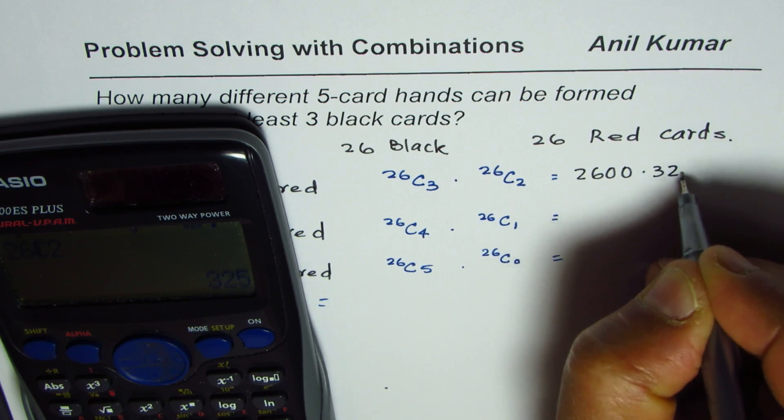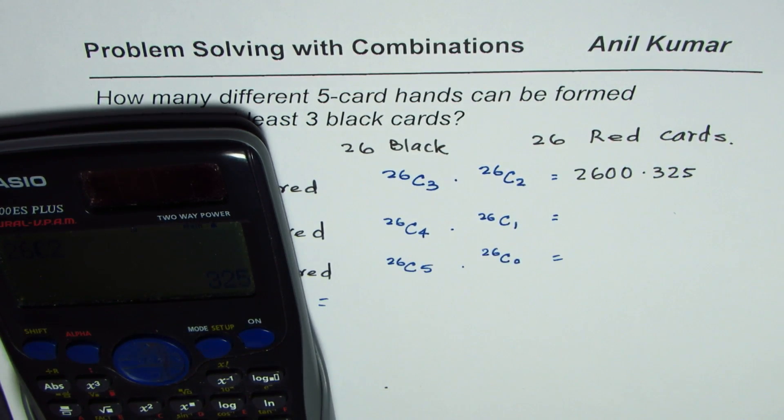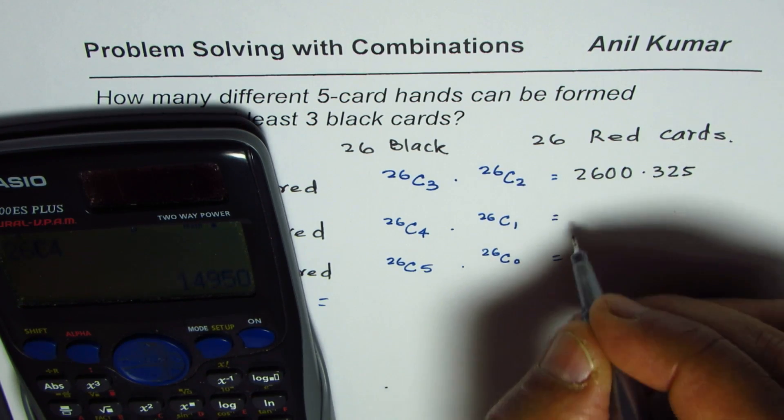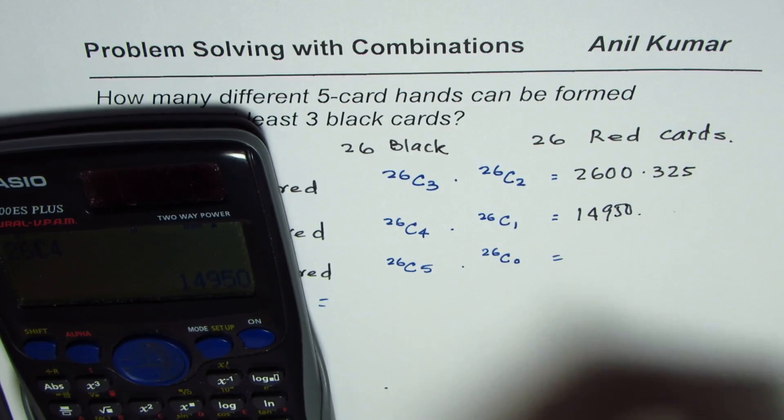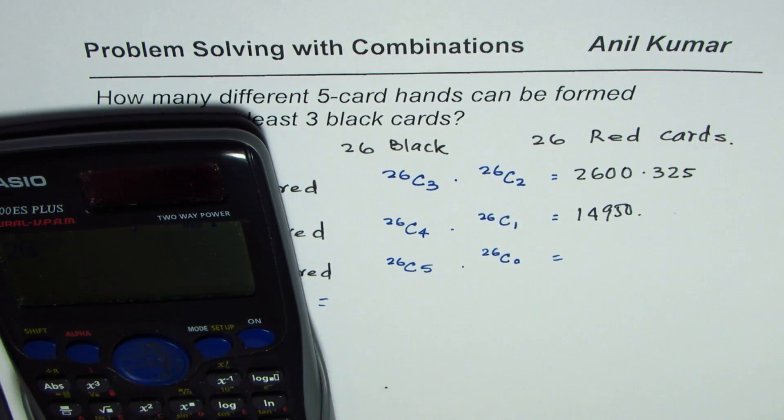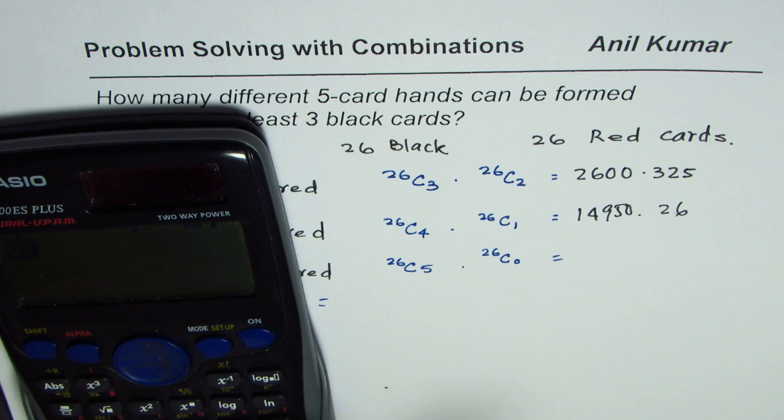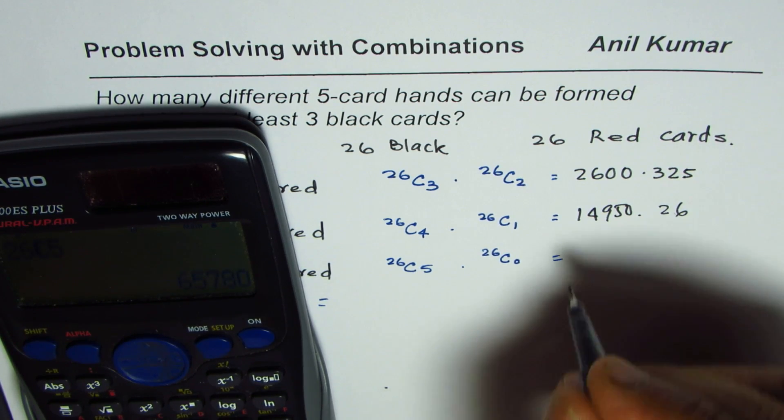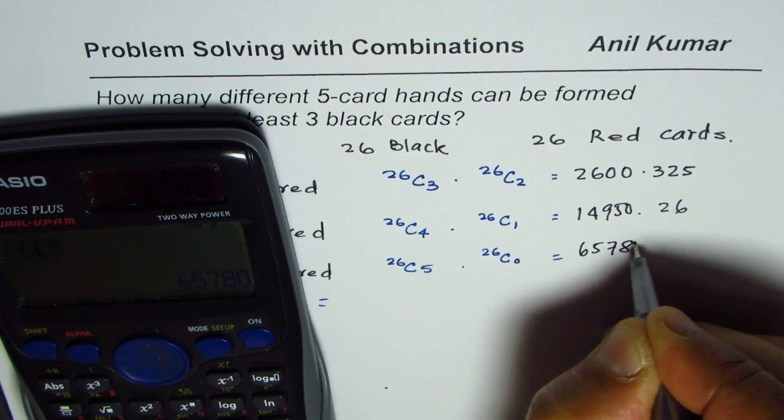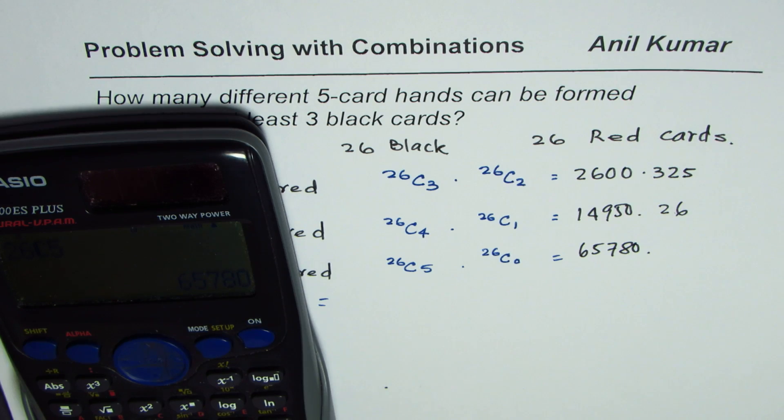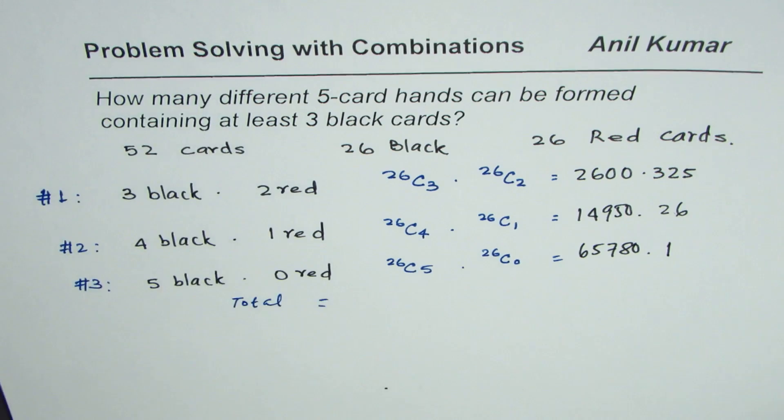And then we have 26C4, so 26C4, which is 14,950, times 26C1, which will be 26. And then we have 26C5, as 65,780, times 26C0, which is 1. So, you get these values.